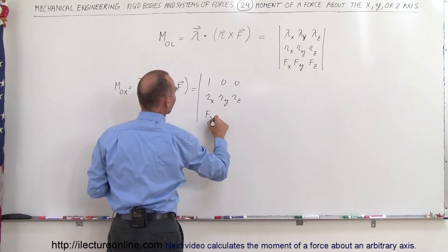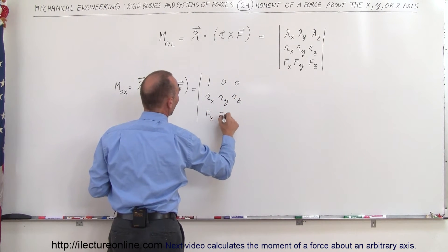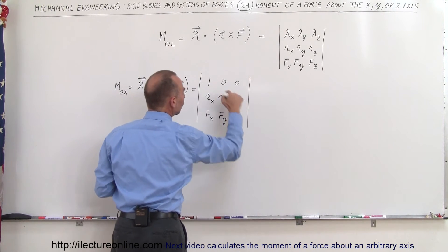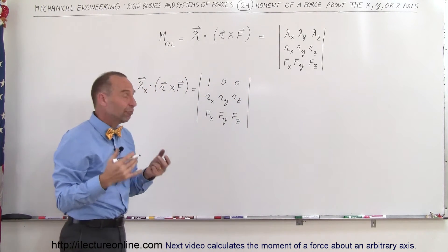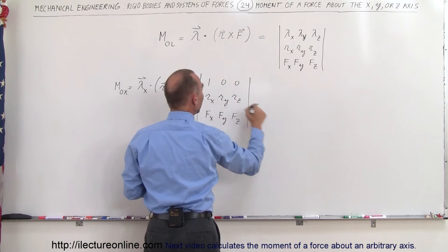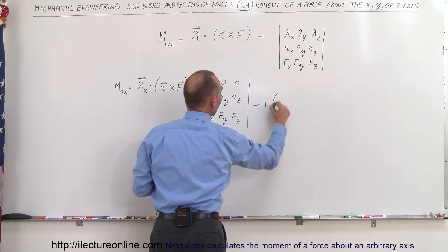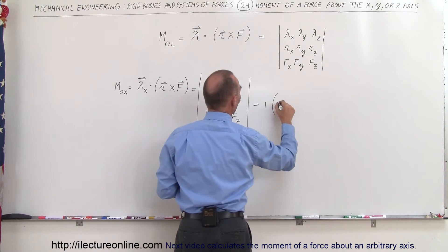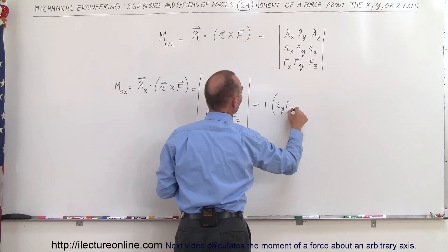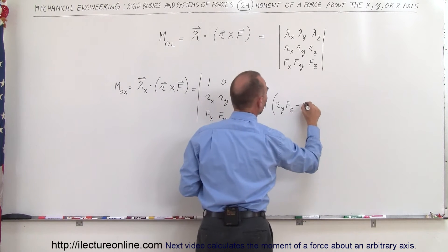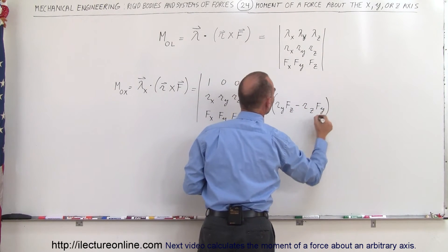And the force components are F sub X, F sub Y, and F sub Z. Since those two unit vector entries are zeros, we're only going to have the following result. This is going to be equal to 1 times (R sub Y times F sub Z minus R sub Z times F sub Y).